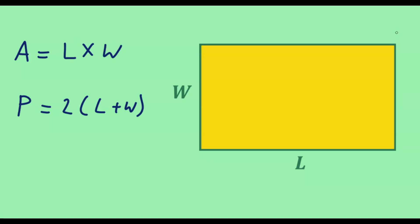To find the perimeter of the rectangle — that is, to determine the length of the boundary of the rectangle — we take 2 times the sum of the length and width of the rectangle.